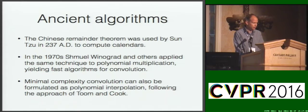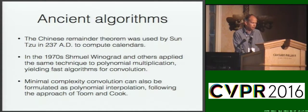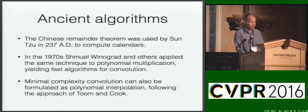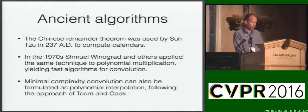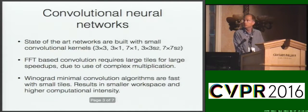Of course, the fast Fourier transform and convolution theorem can be used to implement fast convolutions, but there is another class of fast algorithms that originated in ancient China for modular arithmetic. In the 1970s, Winograd used the so-called Chinese remainder theorem to study the complexity of polynomial multiplication, which is equivalent to linear convolution. The subset of Winograd algorithms we use are usually referred to as Cook-Toom algorithms.